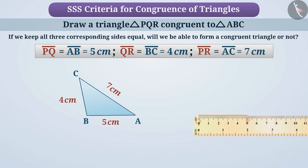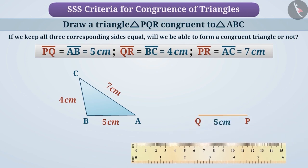First we will draw the line PQ with length 5 cm. Now, we have to find the location of point R. But the condition is that PR should be 7 cm long and QR should be 4 cm long. So tell me, how will you find the location of point R? Think for a while.